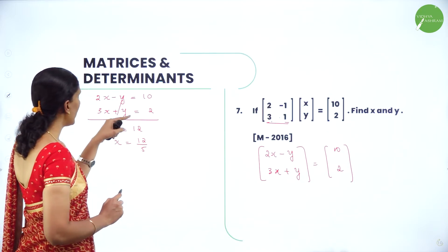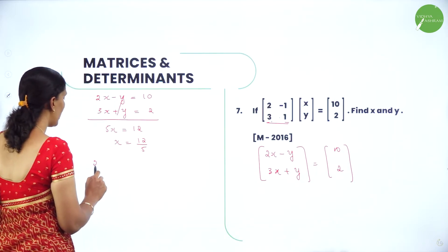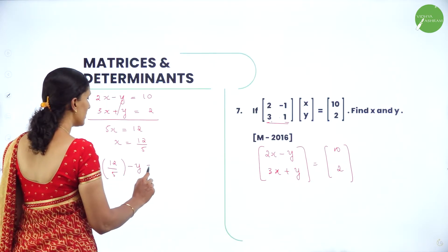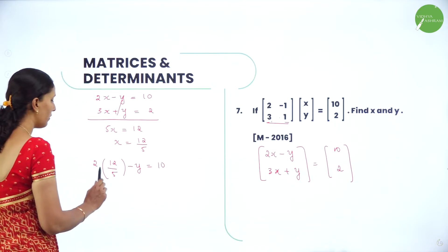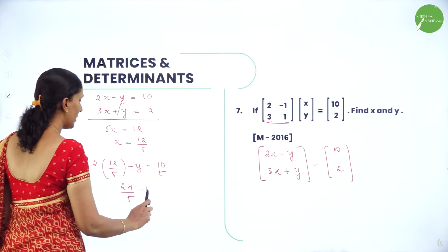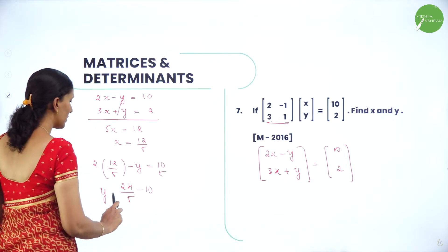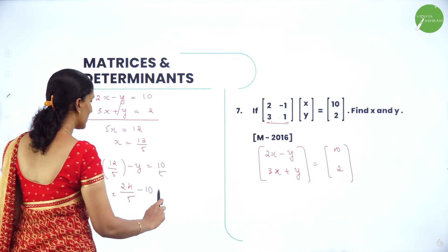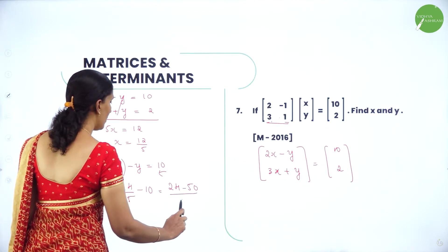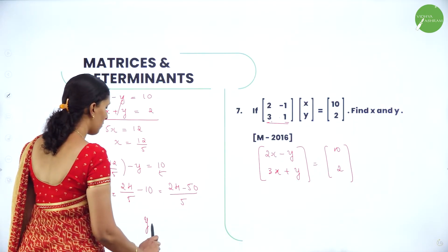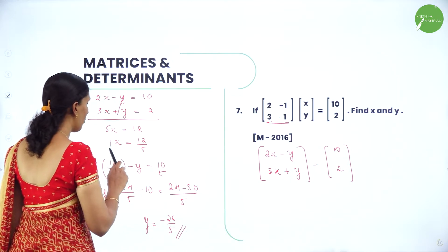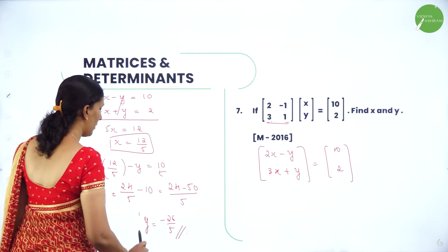Substituting x = 12/5 into 2x - y = 10: 24/5 - y = 10, so y = 24/5 - 10 = (24 - 50)/5 = -26/5. Therefore x = 12/5 and y = -26/5.